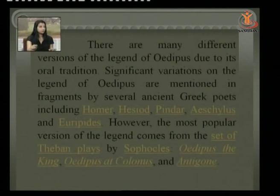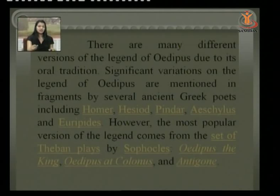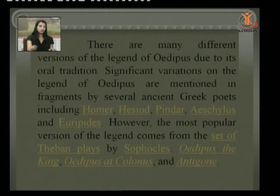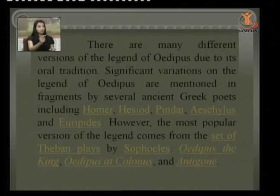There are many different versions of the legend of Oedipus due to its oral tradition. Significant variations are mentioned in fragments by Greek poets and dramatists including Homer, Hesiod, Pindar, Aeschylus, and Euripides. However, the most popular version comes from the set of Theban plays by Sophocles — the trilogy consisting of Oedipus the King, Oedipus at Colonus, and Antigone. The first, Oedipus the King, is our primary concern.